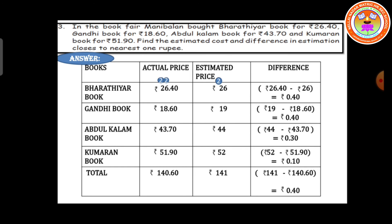Now write down the book names. First, Bharatiyar book: actual price is 26 rupees 40 paise. 40 paise is less than 50 paise, so we write the rupee value as it is — 26 rupees stays 26 rupees. Gandhi book: 18 rupees 60 paise. 60 paise is greater than 50 paise, so add plus 1: 18 rupees becomes 19 rupees. Abdul Kalam book: 43 rupees 70 paise. 70 paise is greater than 50, so 43 plus 1 gives 44 rupees. Kumaran book: 51 rupees 90 paise. 90 paise is greater than 50, so 51 plus 1 gives 52 rupees.